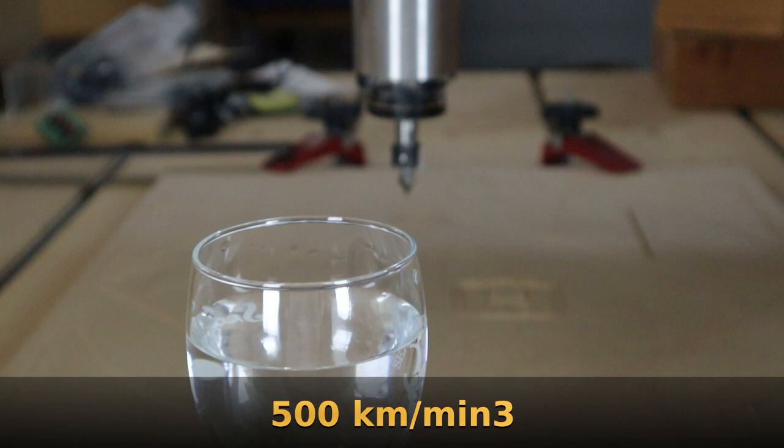With jerk set to 1000 kilometers per minute cubed, the water moves slightly, so I backed it off to 500. Notice that the acceleration and deceleration times are much shorter.